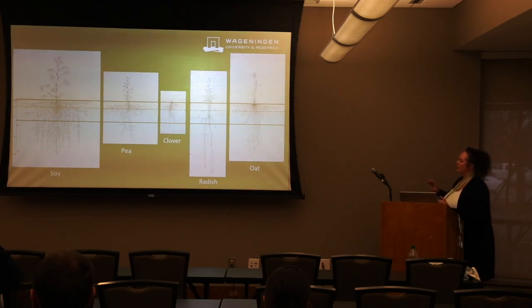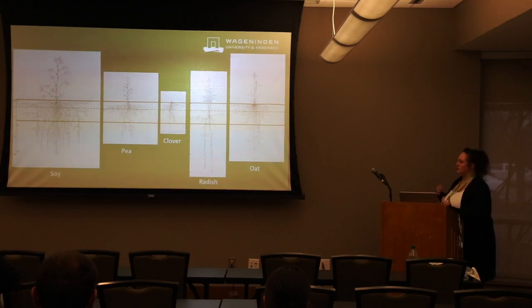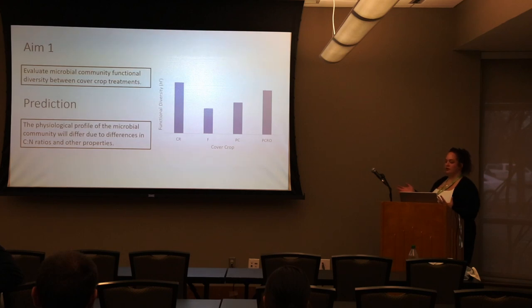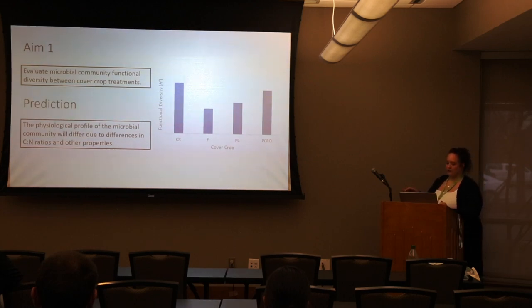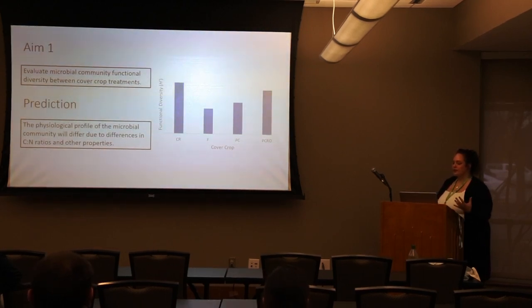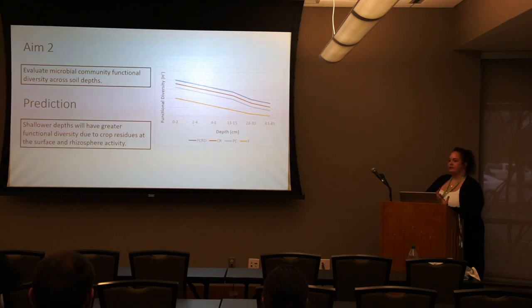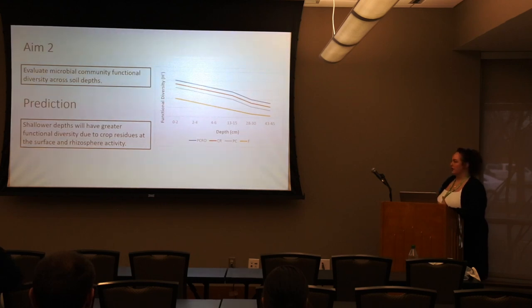The pea, clover, radish, and oat mix is also shown in relation to soy. With most of our cover crops, we're getting a representation of what's happening within the rhizosphere and then outside of it. The first thing I wanted to look at was how functional diversity — what these microbes are able to do — is influenced by our different cover crops, predicting that based on carbon-to-nitrogen ratios and unique plant properties, we'll see different levels of functional diversity. My second aim was to examine how functional diversity changes across depths.